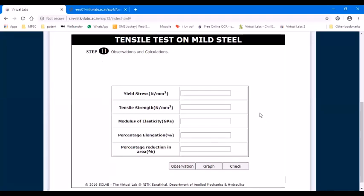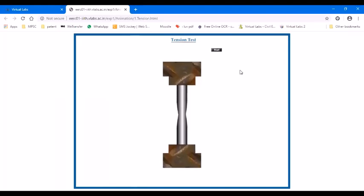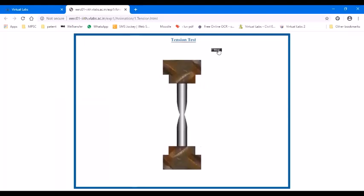And then you can observe some points. We have another section where you can observe. See, a bar is attached to the UTM and when the tensile load is applied, it breaks. See how it breaks. As it elongates, its diameter gets reduced. And when its capacity is over, it breaks into two pieces. You can see again.